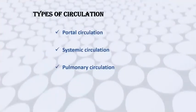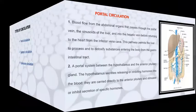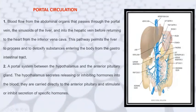Now we are moving to the next part of this module: the types of circulation. There are three different types — portal circulation, systemic circulation, and pulmonary circulation. First we will see what is portal circulation.